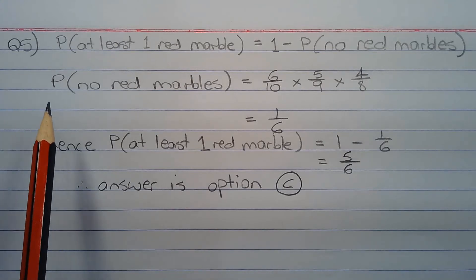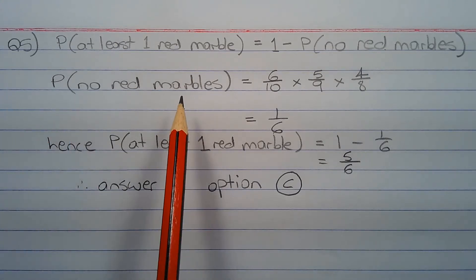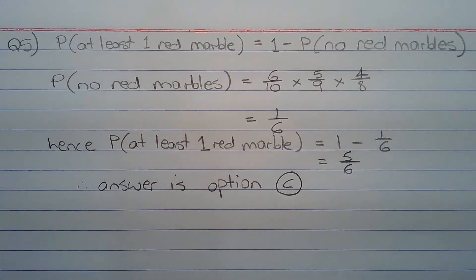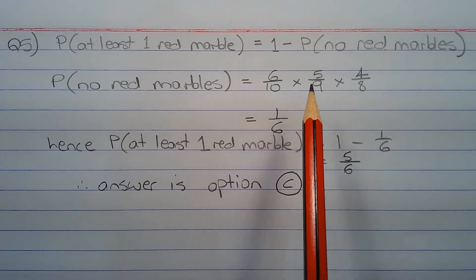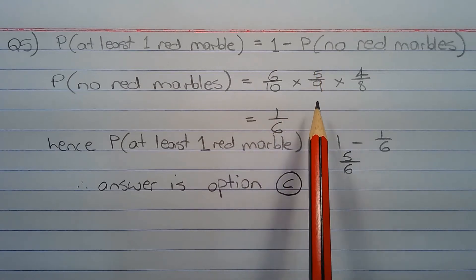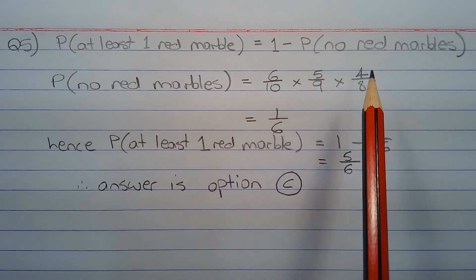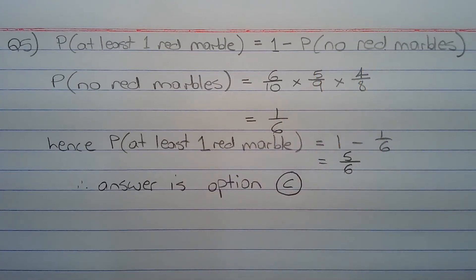The probability of selecting no red marbles or all blue marbles equals 6 over 10 times 5 over 9 times 4 over 8, since this is selection without replacement.